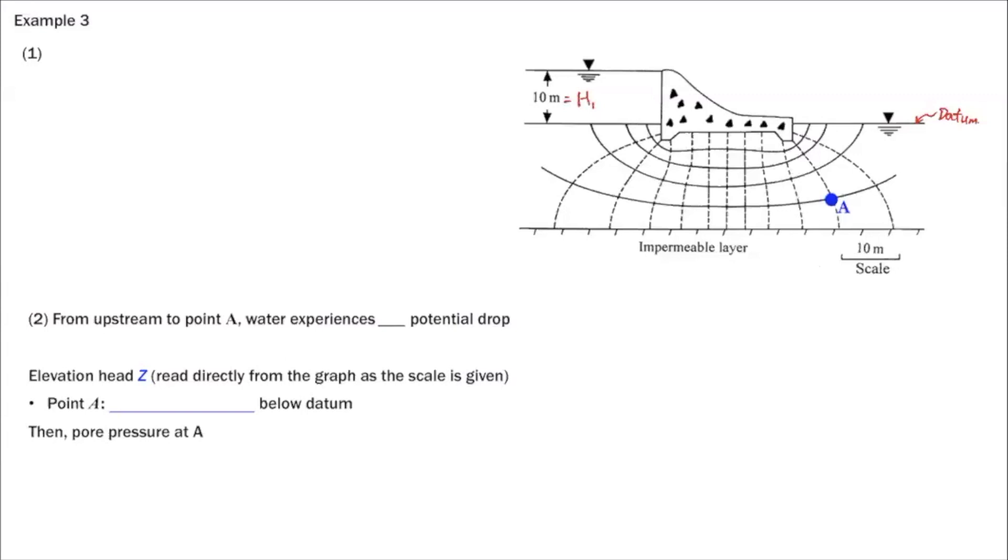So that's the height of water table above your reference datum. That's the total head. And for downstream, H2 equals zero. Then the total head loss, we call capital H. That's the difference between upstream and downstream, H1 minus H2. So that's 10 meters. So that's the total head loss from upstream to downstream.